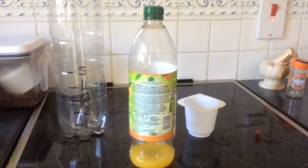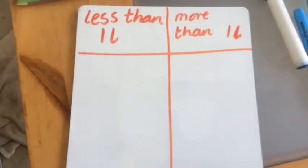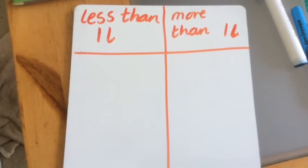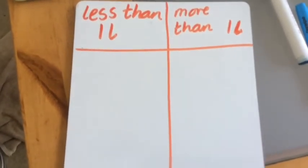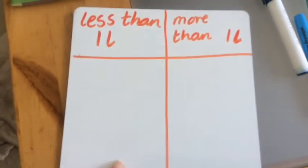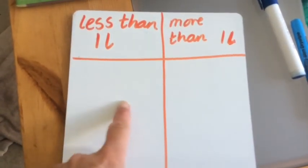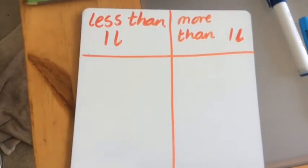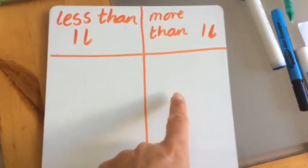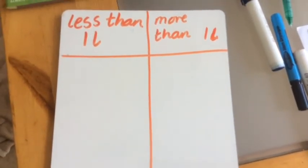And on your square paper, you can make a simple table like this. So one column, you're going to draw all the containers you found that you think hold less than one litre. Down here, draw all the things that you think will hold more than one litre.